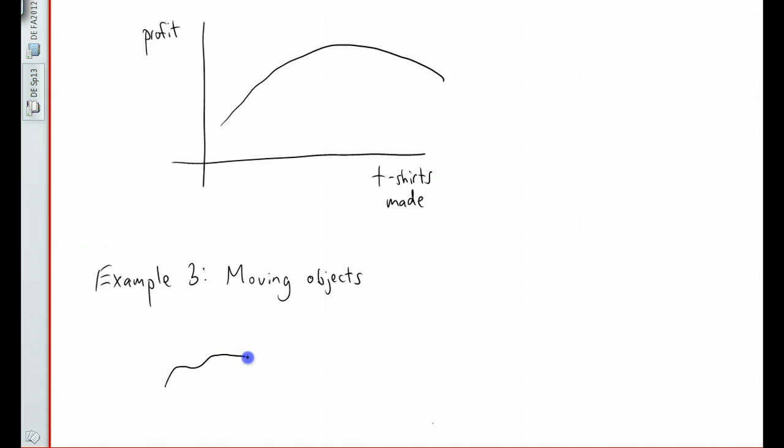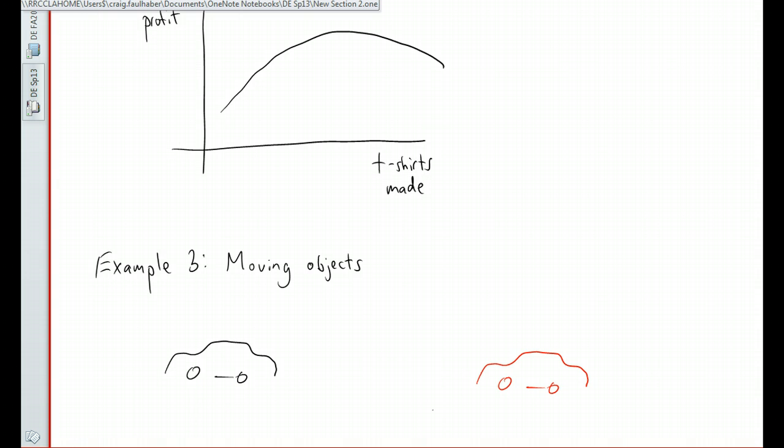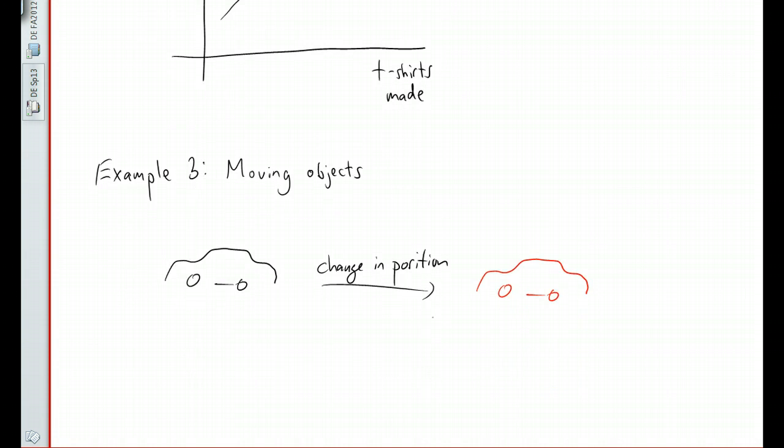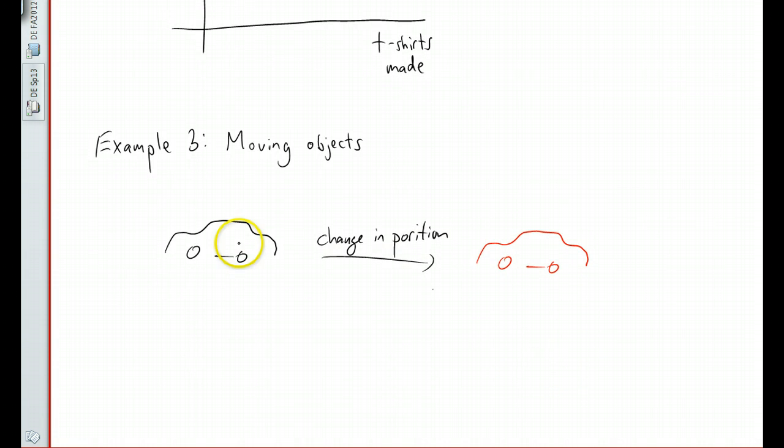Consider a car driving down the street. When the car moves, this is a change in position. Notice I used that word again - change. Movement or speed is a change in position. So what we can say is that the derivative of position is speed.